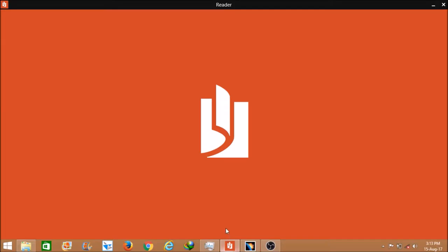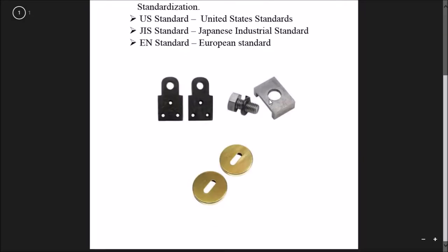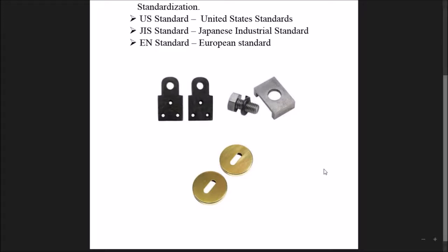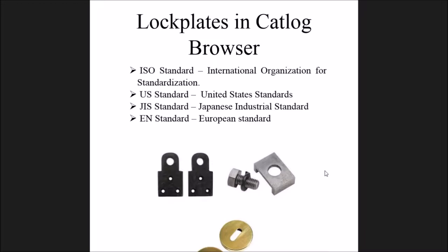In this video I will explain especially about lock plates. As you can see in the image, these are all lock plates, and they are used to hold and give support to any component in the automobile industry or any other place. I also want to tell you that this lock plate you won't find in all 4 standards — ISO standard, US standard, GIS standard, and EN standard — you will only find it in GIS standard.